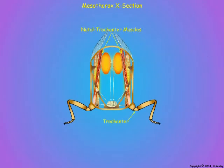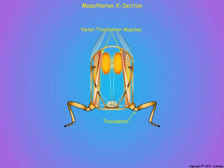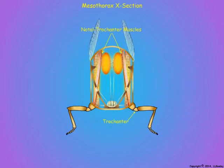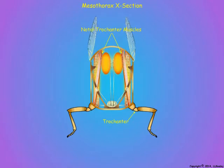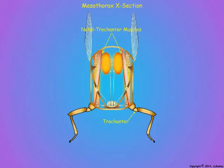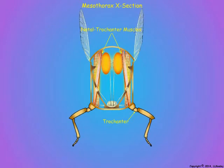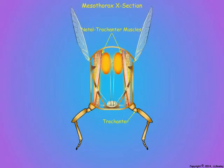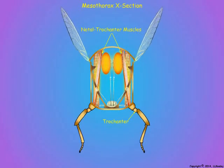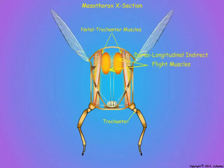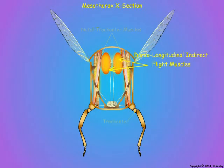Contraction of nodal trochanter muscles pulls down on the nodum and up on the base of the legs, thrusting the legs downward, especially the mesothoracic legs. This launches the insect into the air, at the same time lengthening the nodum and stretching the activated dorsolongitudinal muscle.